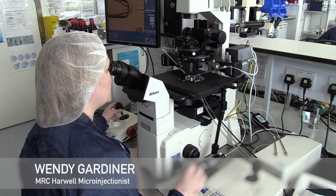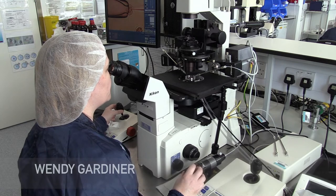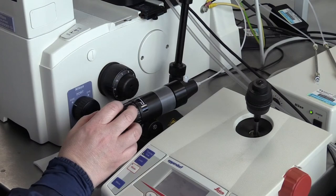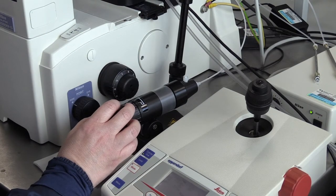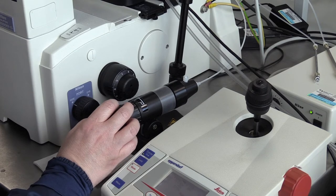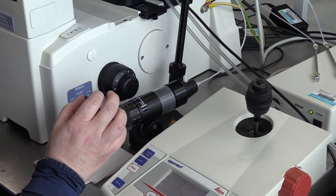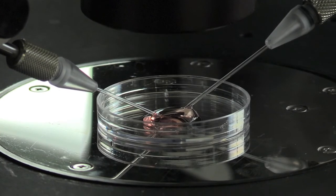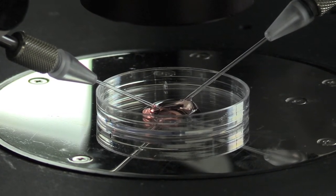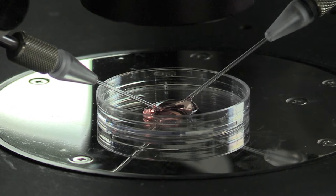So with my right hand, I'm controlling the suction of the embryo on the holding pipette. I very gently turn it clockwise. It blows the embryo off and anti-clockwise sucks it back on onto the holding pipette. This is to get the embryo in the correct position for injection.